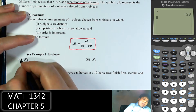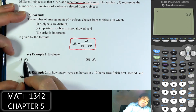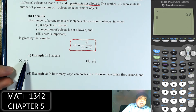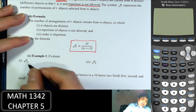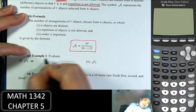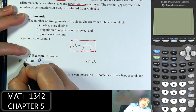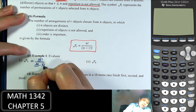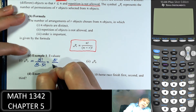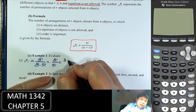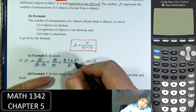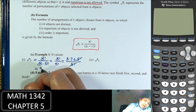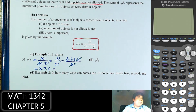Let's evaluate 8P3, which means permutation of 3 out of 8. The formula gives us 8 factorial over (8 minus 3) factorial, which is 8 factorial over 5 factorial. Writing out: 8 times 7 times 6 times 5 factorial over 5 factorial. The 5 factorials cancel, giving us 8 times 7 times 6, which equals 336.